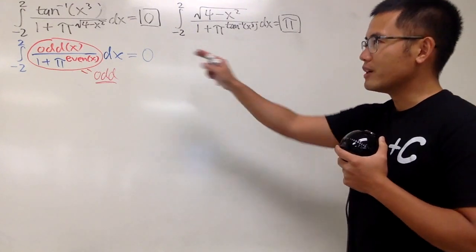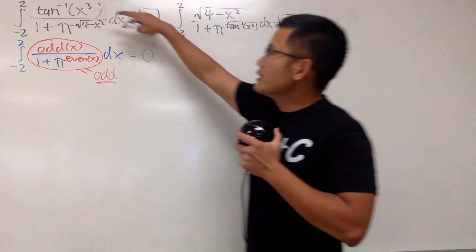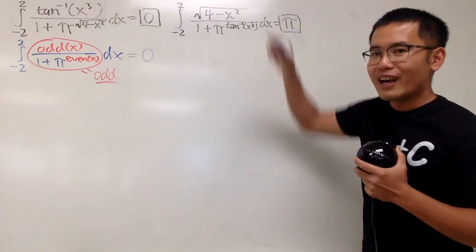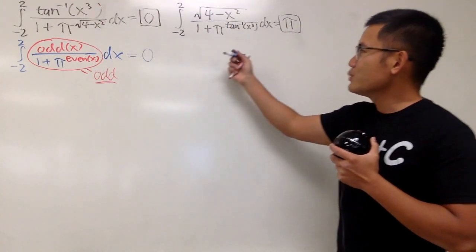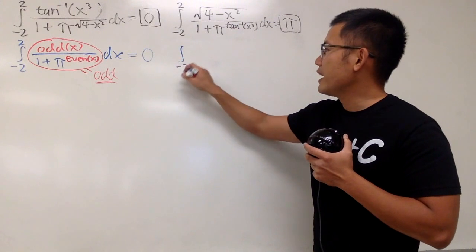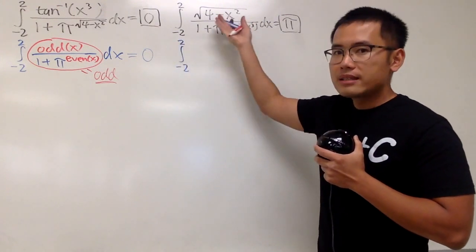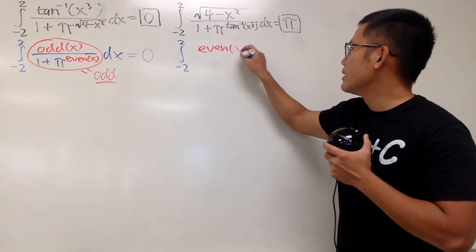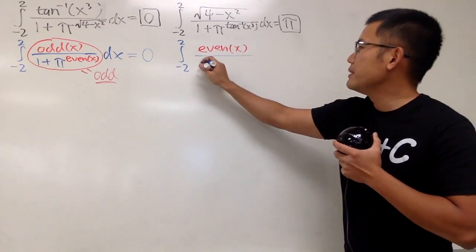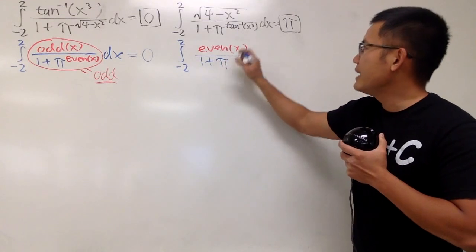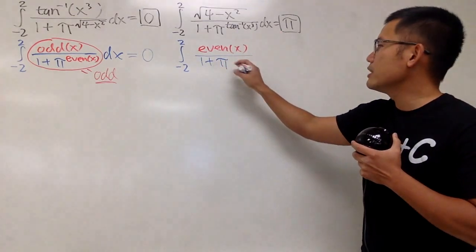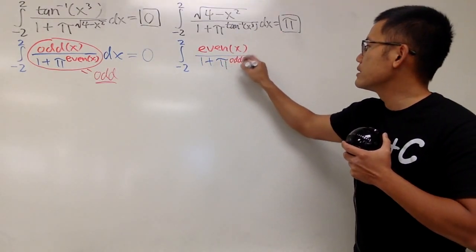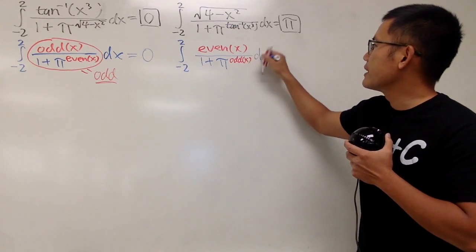Notice that the difference between the first and the second one is, we just switch the functions right here, right? For this one, though, we have the integral from negative 2 to 2. On the top, we have an even function now, namely this. And on the bottom, we have this, namely 1 plus pi. And this is an odd function. So I'll just put this down right here for you guys. Like that.